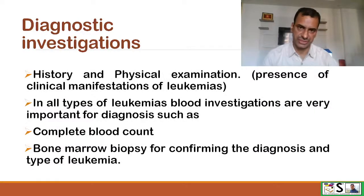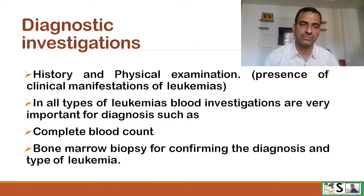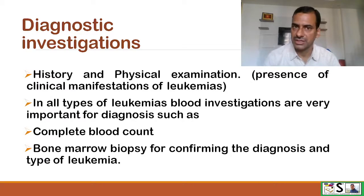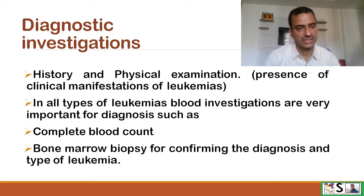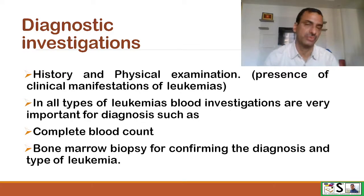Diagnostic investigations for all types of leukemias: history and physical examination give an initial hint, then for definitive diagnosis a complete blood count is done, and bone marrow biopsy is very important for confirming the type of leukemia.